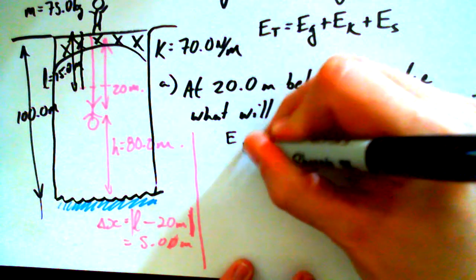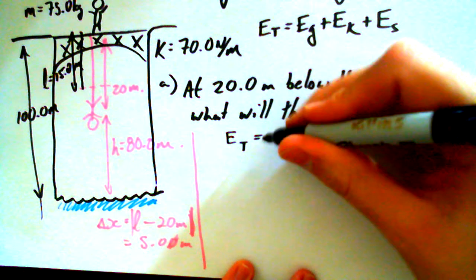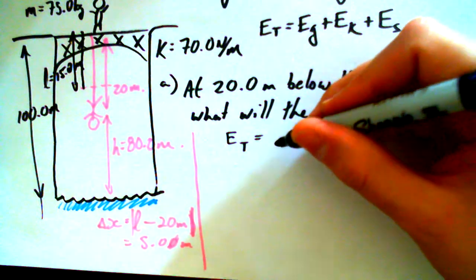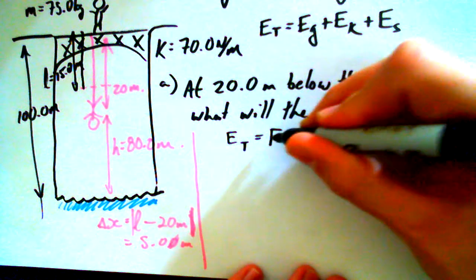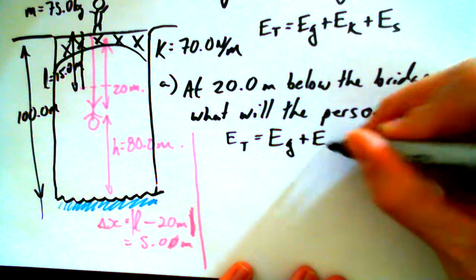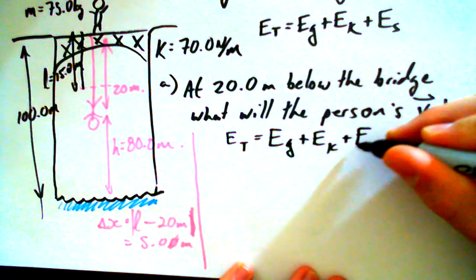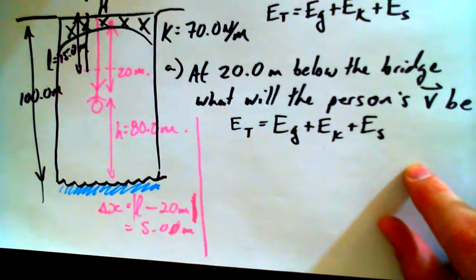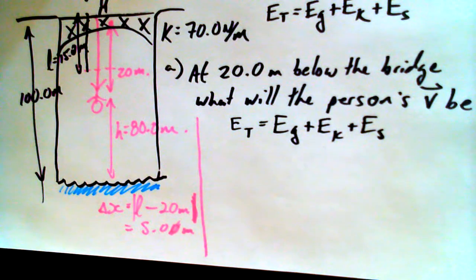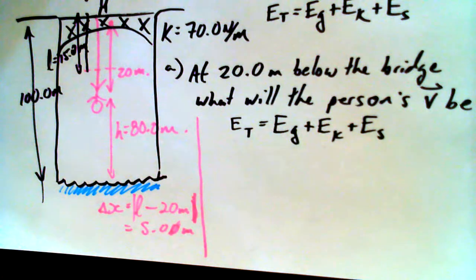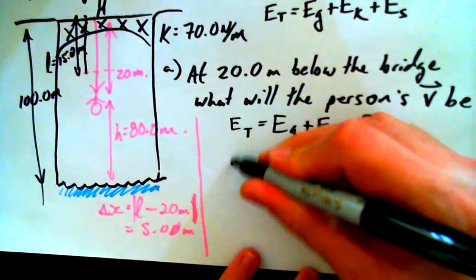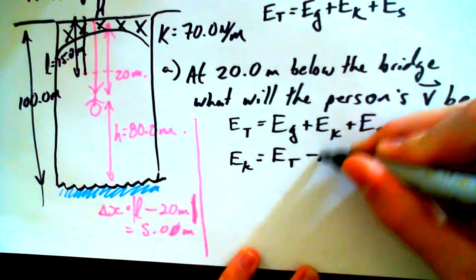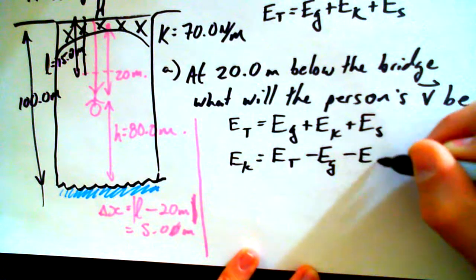And we could say that E total is equal to E_G plus E_K plus E_S. And where are we going to get the velocity from? Which of these values? Yeah, the E_K. Now, we can't zero any of these things out. None of these things are zero. We've kind of gone through the logic behind why they're not zero. So I can get E_K all by itself. E_K is equal to E total minus E_G minus E_S.